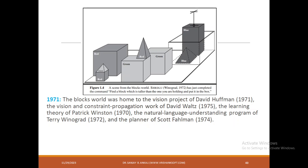During 1971, a major breakthrough came where computer systems could identify blocks and place them in an open box. Given an instruction like 'pick the block which is twice the height of this image,' the computer would pick the item and place it in the open box. This block world was home to the vision project of David Huffman, constraint propagation work of David Waltz, learning theory of Patrick Winston, natural language understanding by Terry Winograd, and the planner of Scott during 1974.